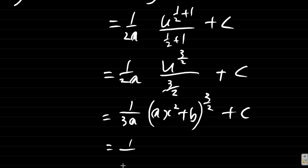It can also be written as ax squared plus b, this is the square root of the cube of ax squared plus b if you remember your indices, plus c.